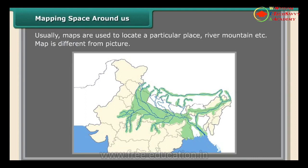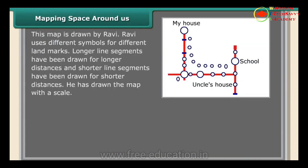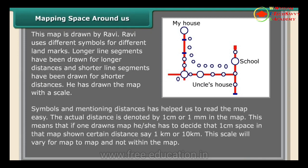This map is drawn by Ravi. Ravi uses different symbols for different landmarks. Longer line segments are drawn for longer distances, and shorter line segments for shorter distances. He has drawn the map with a scale, symbols, and distances, which helps us read the map easily.